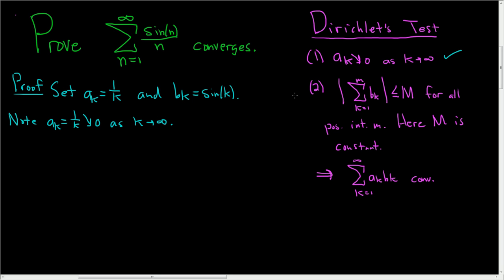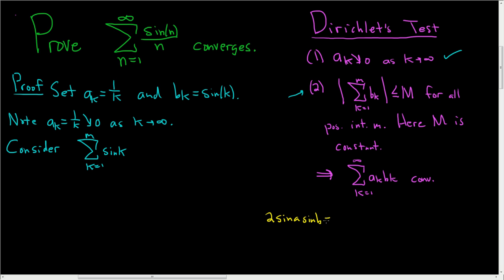Now, the challenge is to show condition 2. Consider the finite sum as k runs from 1 to little m of sin(k), and we have to show that this finite sum is actually bounded. I found this trig identity: 2 sin(a) sin(b) = cos(a − b) − cos(a + b).